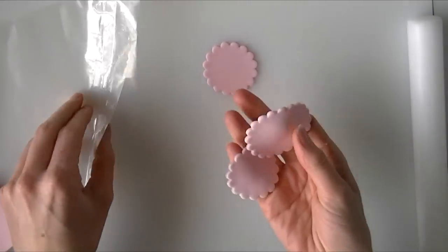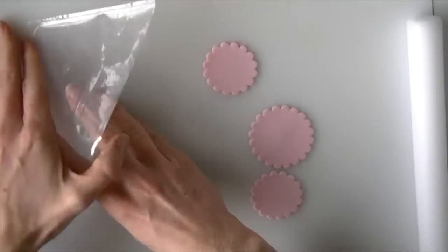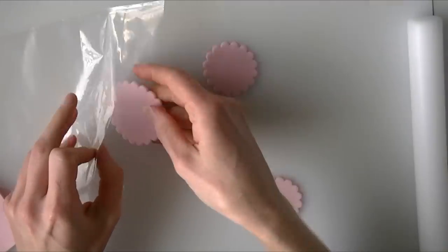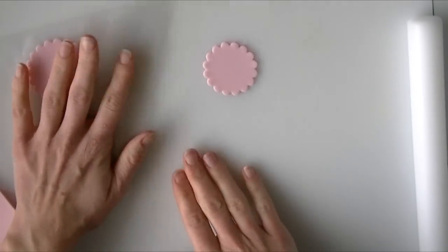So I do not want these to dry out while I am frilling the edges, so I have just got some plastic here which is actually a piping bag that I am just going to put them into so that it stops them from drying out. So I will leave those in there.